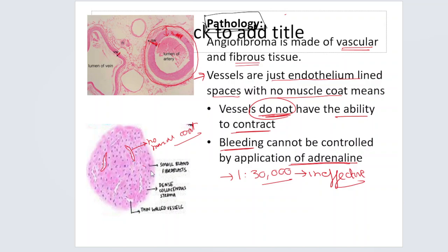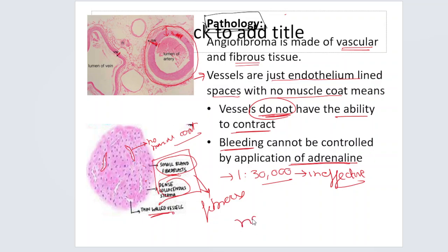These dots are basically small bland fibroblasts. The pinkish color is a dense collagenous stroma. This is how the tumor is made up of — fibrous tissue and thin-walled vessels with no muscle coat. They do not have the ability to contract, and you cannot control it by the application of adrenalin.